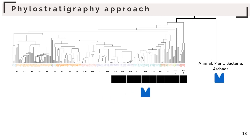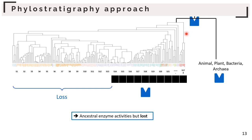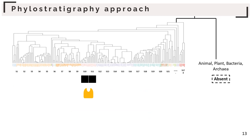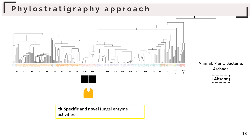Another example: these blue enzyme activities are only present in some fungal species but also found outside fungi. The most likely explanation is that these enzyme activities were already present at their last common ancestor and have been lost by some species during evolution. Lastly, this yellow enzyme activity is only present in some species and not found outside fungi — therefore it is a specific novel fungal enzyme activity.